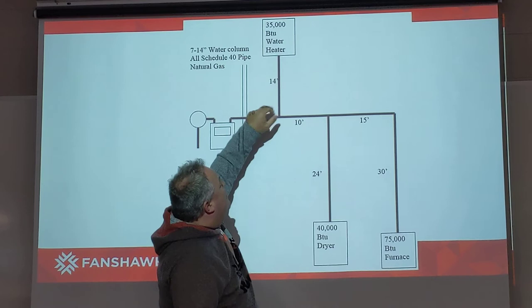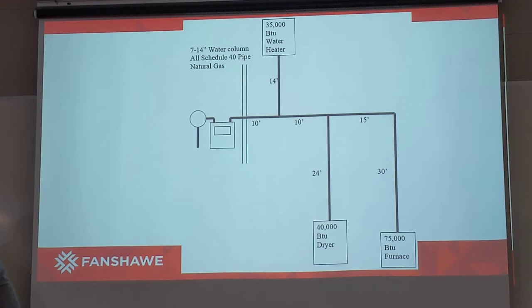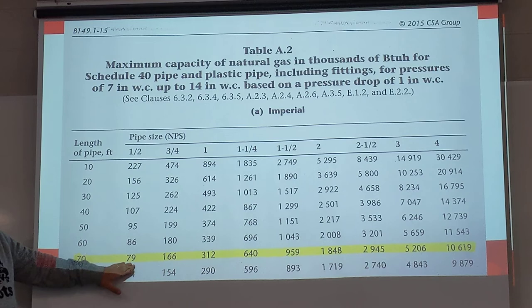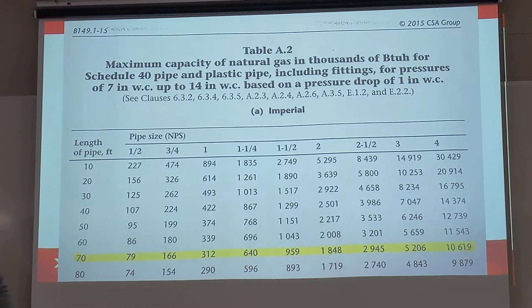Going up to the water heater off the main, we have a 14-footer that needs to serve 35,000 BTUs. We're still going to remain on the 70-foot code zone. Half-inch will work because the 79,000 BTU capacity well exceeds the 35,000 BTUs needed for that particular appliance.